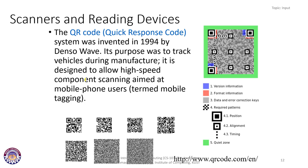QR codes are also commonly used for mobile tagging. You have seen them on the internet and in many companies and organizations. Their purpose is to identify a particular item, person, mobile phone, or even a mobile phone application.